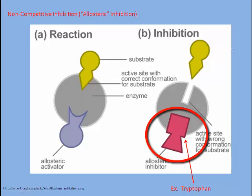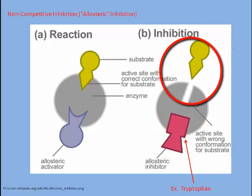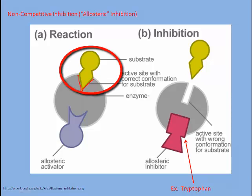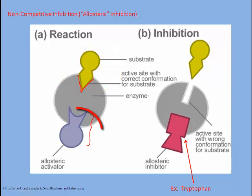Non-competitive inhibition, or allosteric inhibition, is when the inhibitor binds to another place on the enzyme, not the active site, and it causes the enzyme to change its shape at the active site so that the substrate cannot bind. You can see that normally the substrate would fit into this active site and then the reaction could be catalyzed.